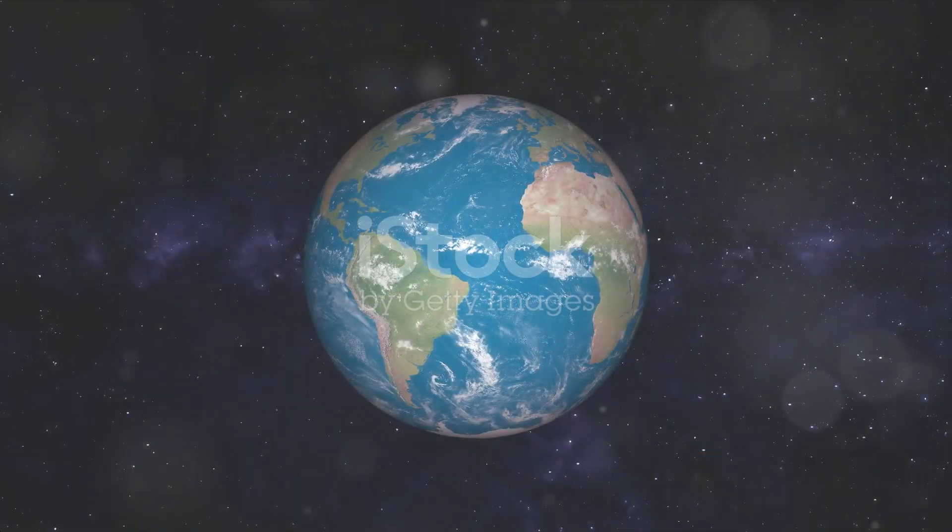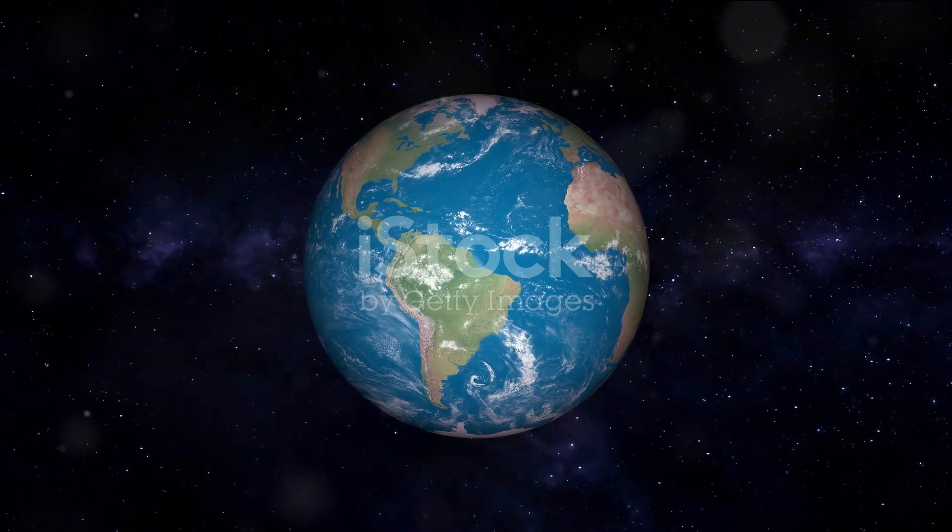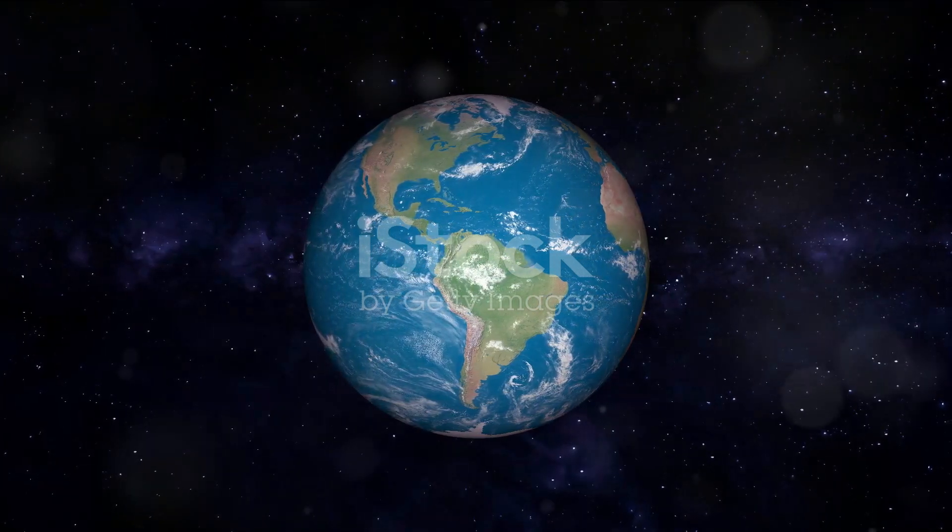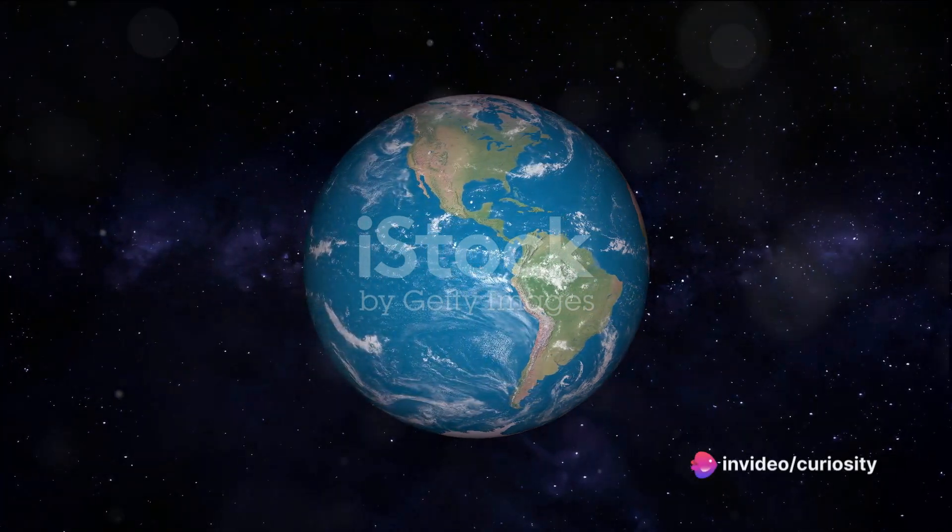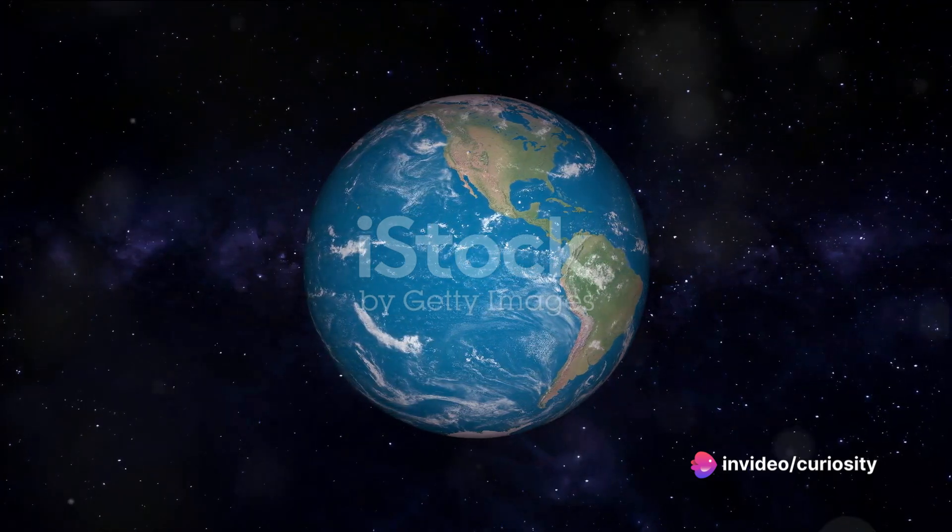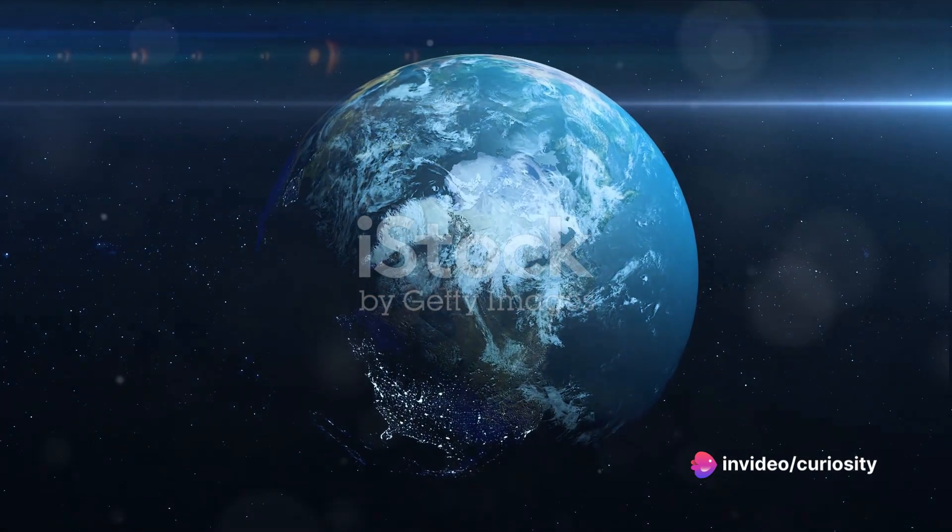So in the grand scheme of our solar system, Earth and Mercury, while seemingly worlds apart, have a few shared characteristics. Earth, our blue planet, teeming with life and diversity, stands in stark contrast to Mercury, a barren, moonless world with extreme temperature fluctuations.